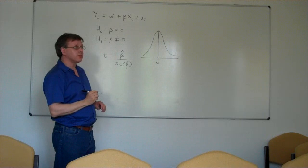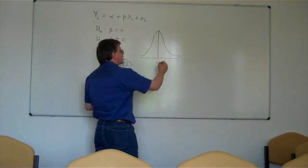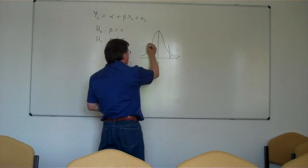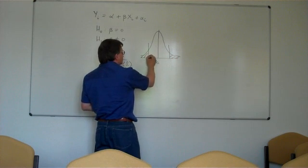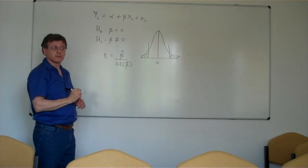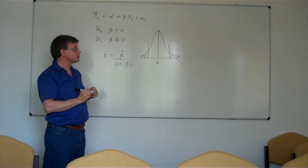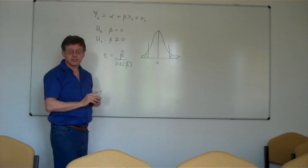And we would reject the null hypothesis if the test statistic lay either too far out here in the right tail or too far out here in the left tail of the distribution. So in this case, when we denote that the alternative is that beta is not equal to zero, we use a two-tail test.